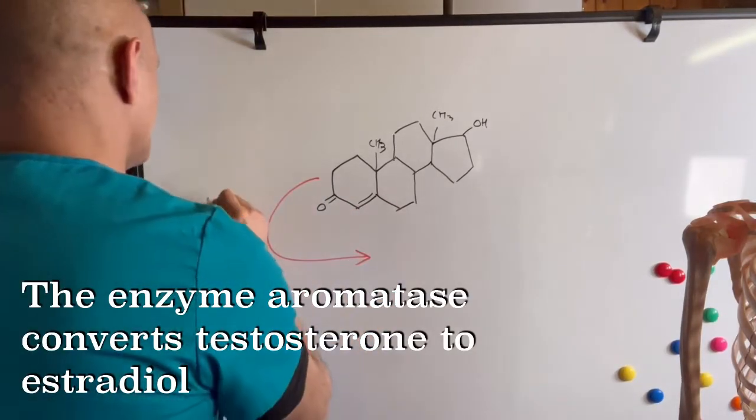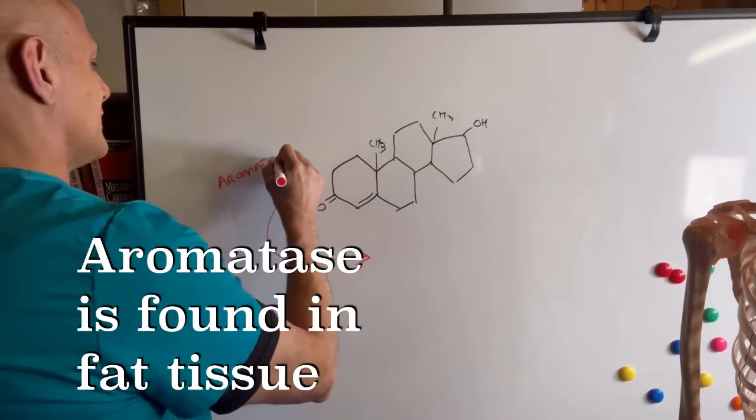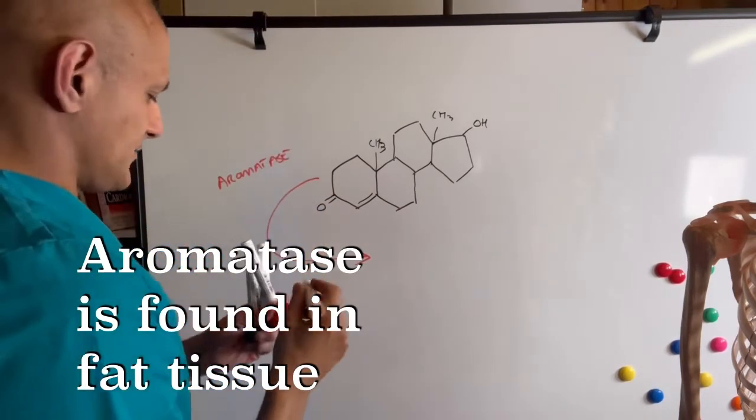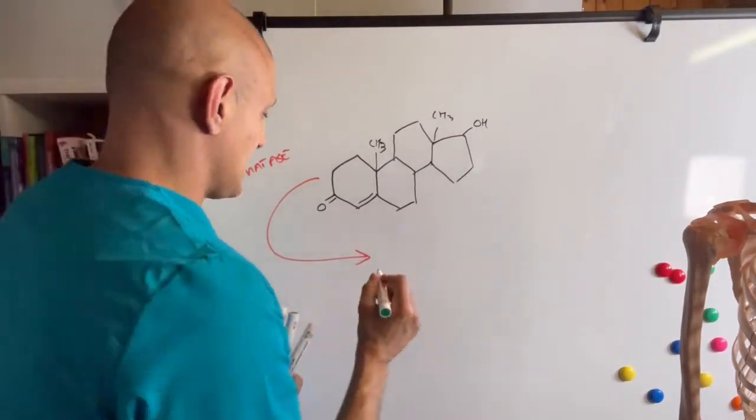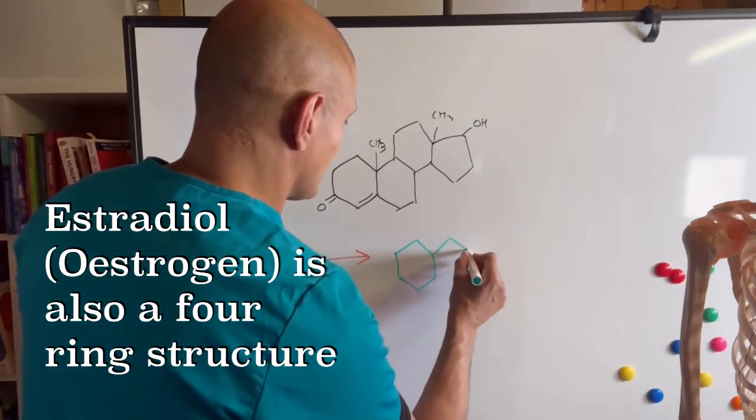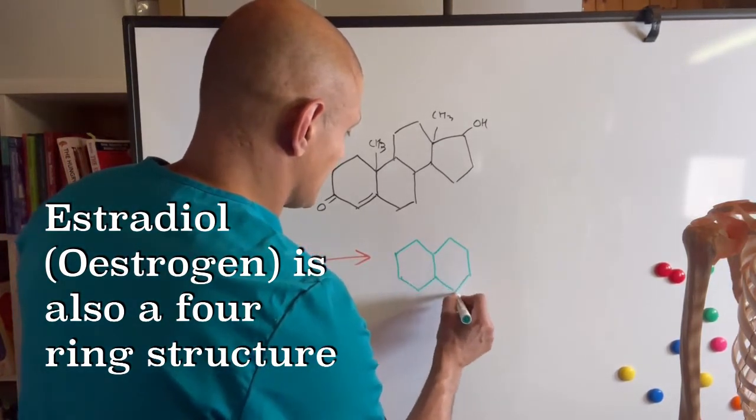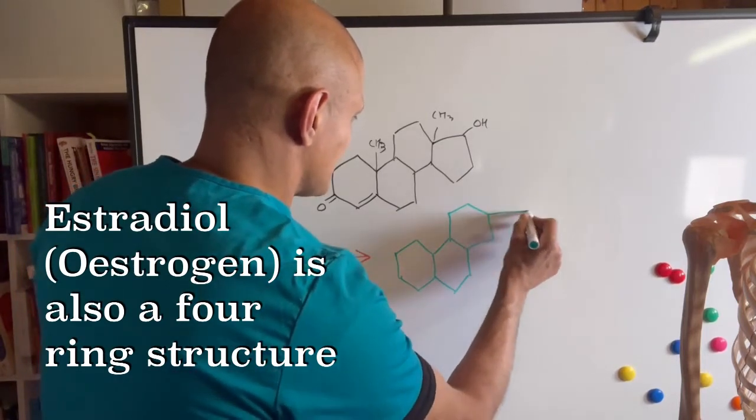Now, under the influence of the enzyme aromatase, which is found in fat, we get estrogen, which is another four carbon ring structure but with a few important changes.